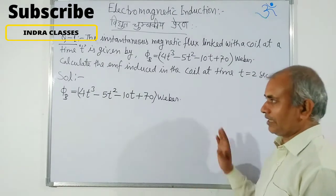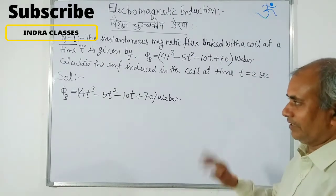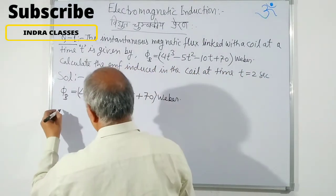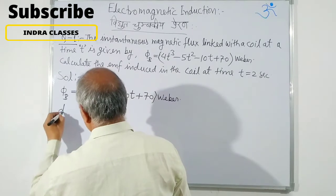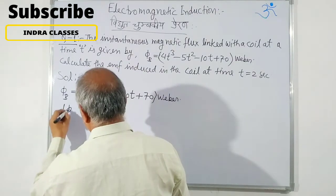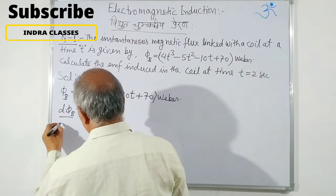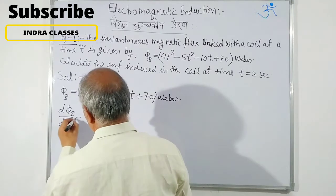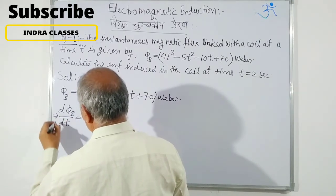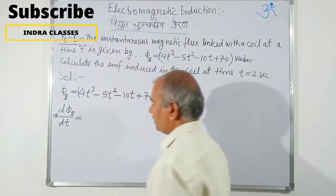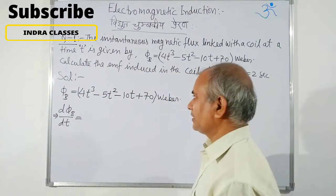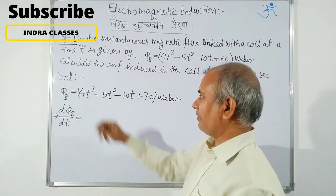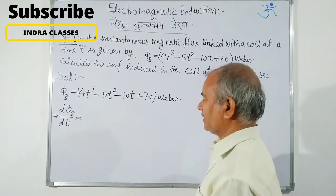We will solve this. This is the differentiation: dφ/dt. What does differentiation mean? The power is multiplied by the coefficient and the power is decreased by 1 unit.